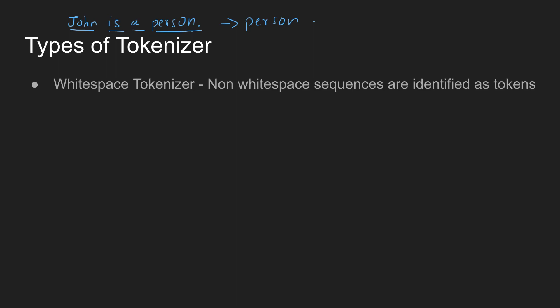So, if we look at the types of tokenizers, we have the whitespace tokenizer. For example, 'John is a person.' — if we use the whitespace tokenizer, 'John' is a word, 'is' is a word, 'a' is a word, and 'person.' is a word. In NLP, which means natural language processing, the whitespace tokenizer is very helpful.